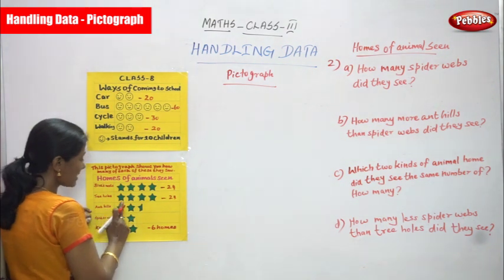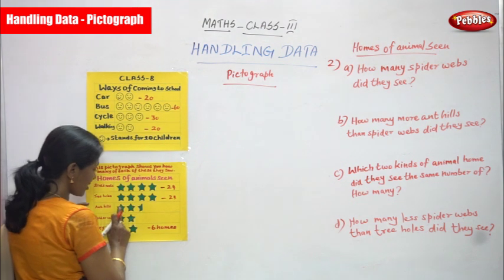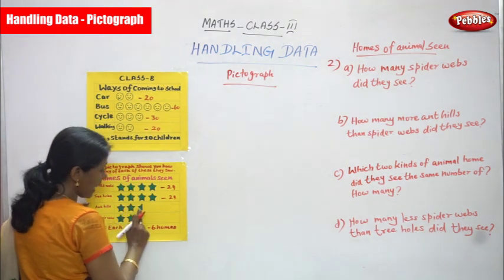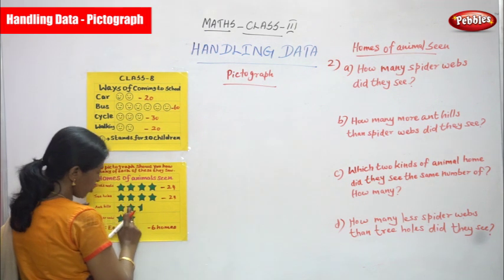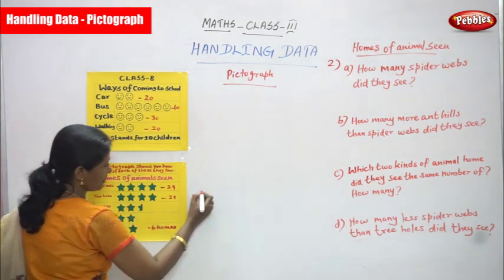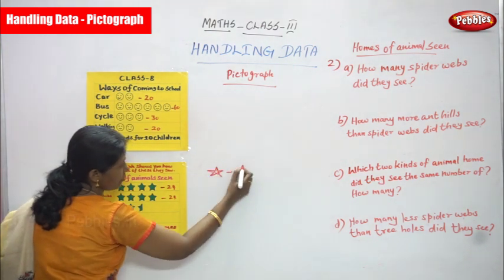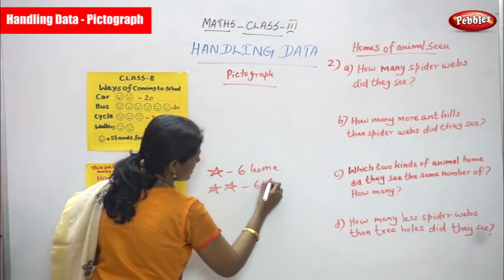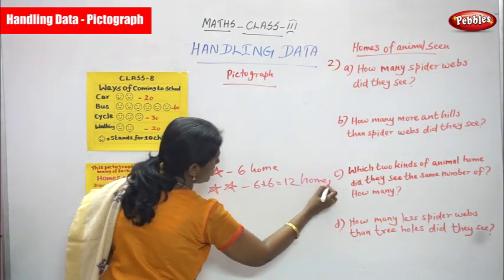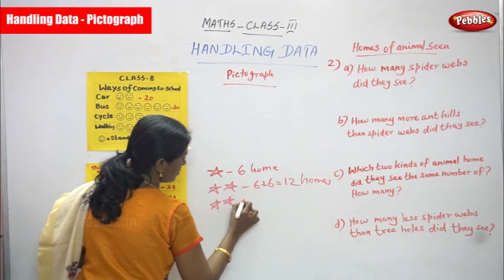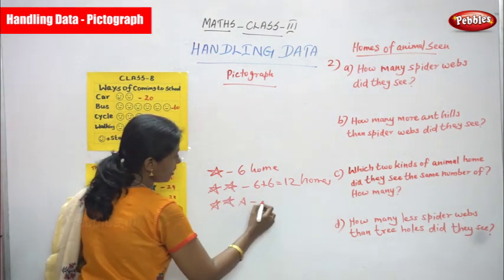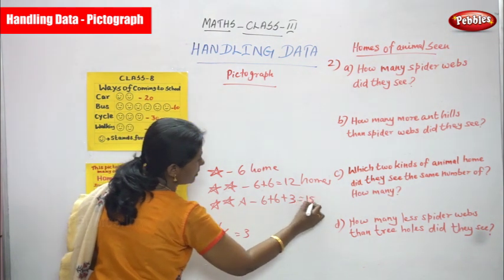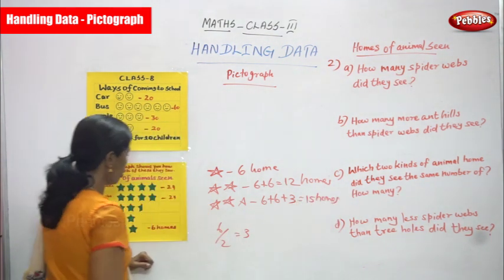For ant hills, there are two and a half stars. The first star is six, the second star is six — so six plus six is twelve. Half a star means six divided by two, which gives three. So two and a half stars: six plus six plus three equals fifteen. Ant hills is fifteen homes.